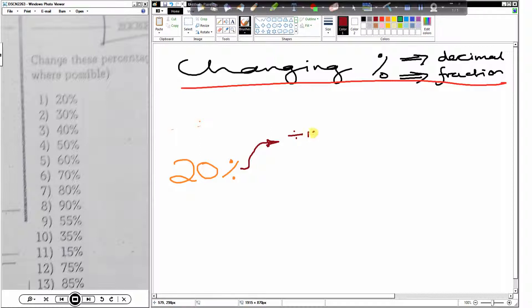We divide by a hundred. Okay, and to change the percentage into a fraction, what do we do? We put the percentage over a hundred and then we simplify it.